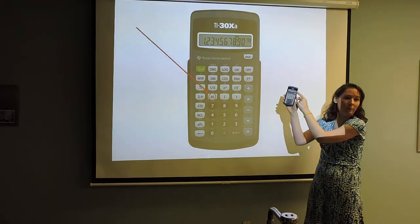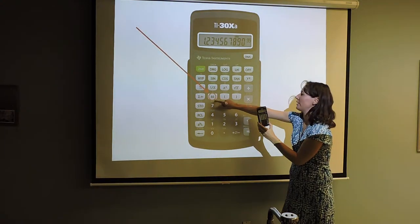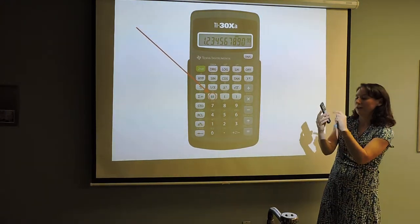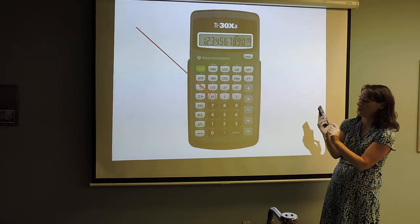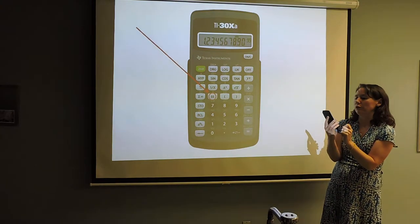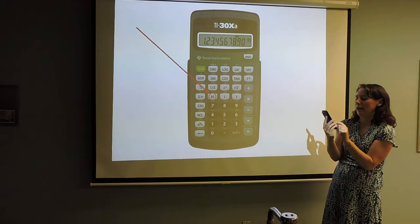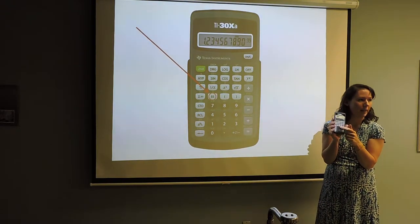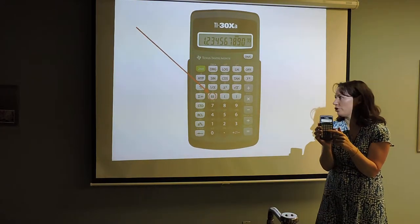That's entering the number in scientific notation. The calculator knows that E stands for 'times 10 to the' — so you don't have to type all that out. You just say 4.3 E and then whatever that exponent is. If you've got other brands like Casio, the button labeling might be slightly different — I'll be happy to show you.